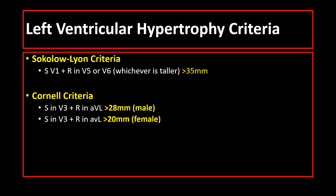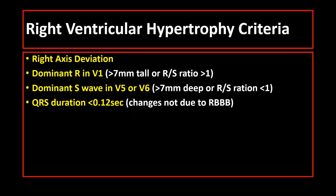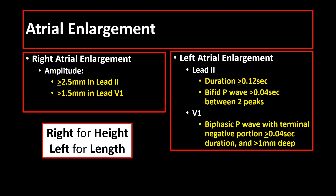In summary, these are some of the criteria for left ventricular hypertrophy, the criteria for right ventricular hypertrophy, and the criteria for atrial abnormality.